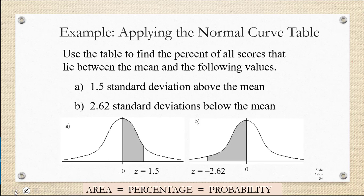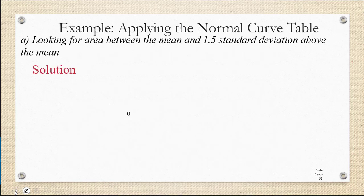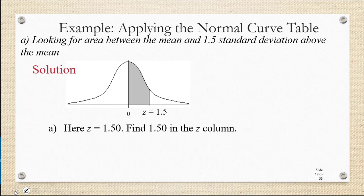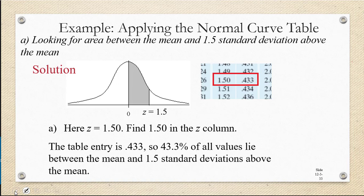Let's go ahead now and refer to the table of values. If you haven't done so already, you should print out the standard z-score table from your textbook or pull it up on another screen. So for Part A, we're looking for the area between the mean and 1.5 standard deviations above the mean. Looking up the z-score of 1.5 on our z-score table, we're going to find 1.5 in the z column, and then to the right of that, we're going to look for the corresponding area. You should see 0.433. What that tells us is that 43.3% of all values lie between the mean and 1.5 standard deviations above the mean.